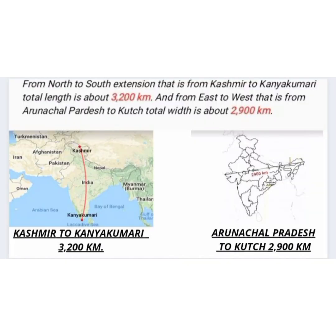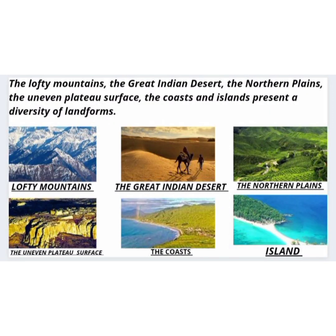India has an area of about 3.28 million square kilometers. From north to south, the extension from Kashmir to Kanyakumari is about 3,200 kilometers. From east to west, from Arunachal Pradesh to Kutch, the total width is about 2,900 kilometers. The lofty mountains, the Great Indian Desert, the northern plains, and the uneven plateau surface, coasts and islands present a diversity of landforms.